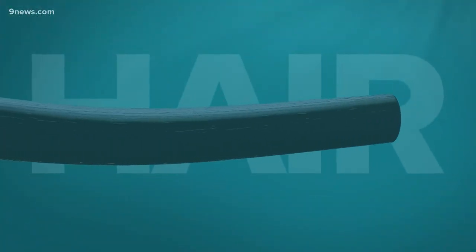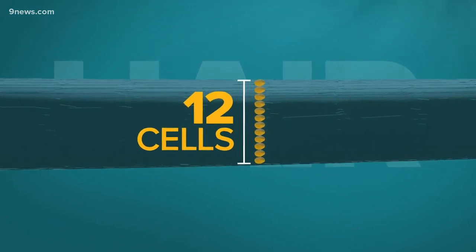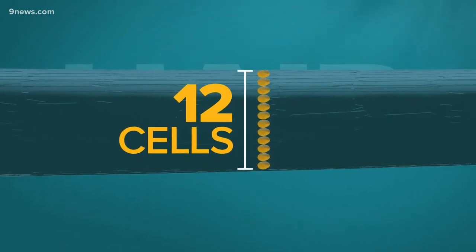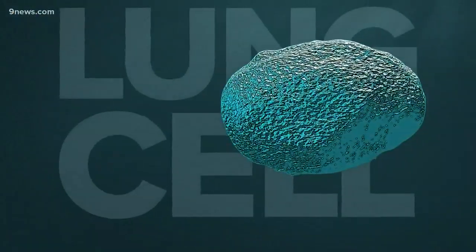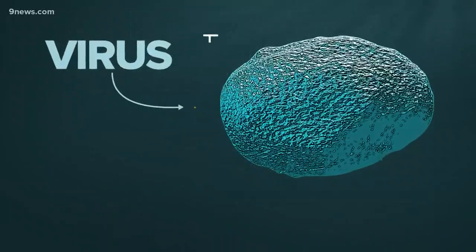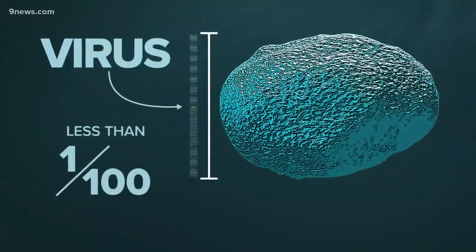Picture just one strand of your hair and stretch that out. Imagine laying a dozen cells across the width of that hair. That's about how big some of your lung cells are. And next to a human lung cell, the coronavirus is still tiny, less than a hundredth of the width.